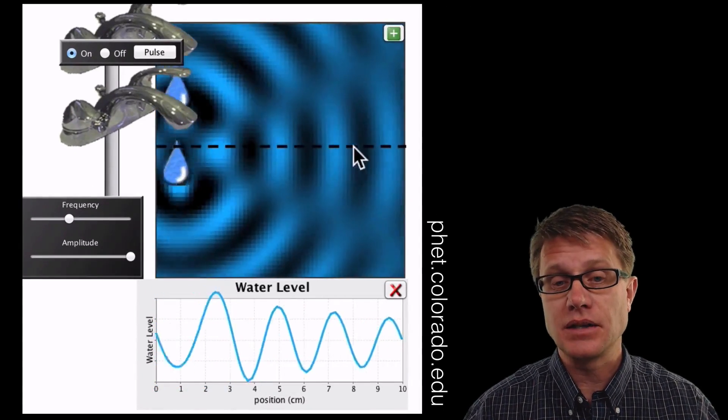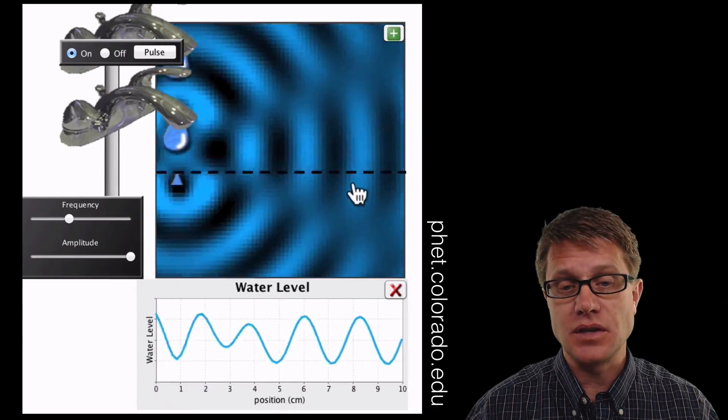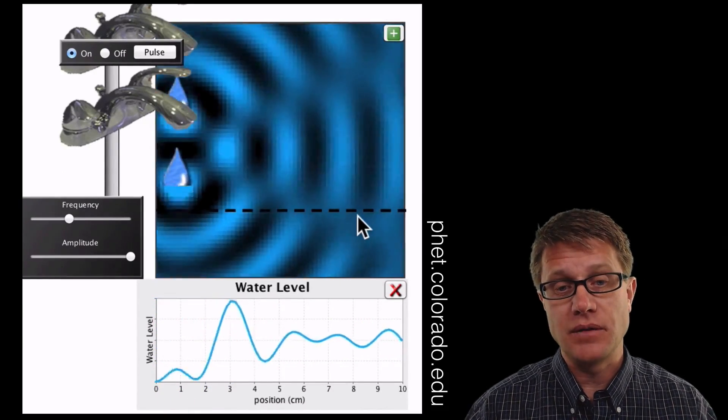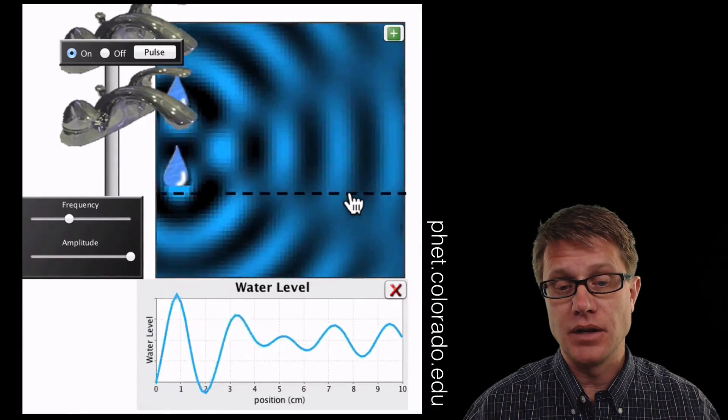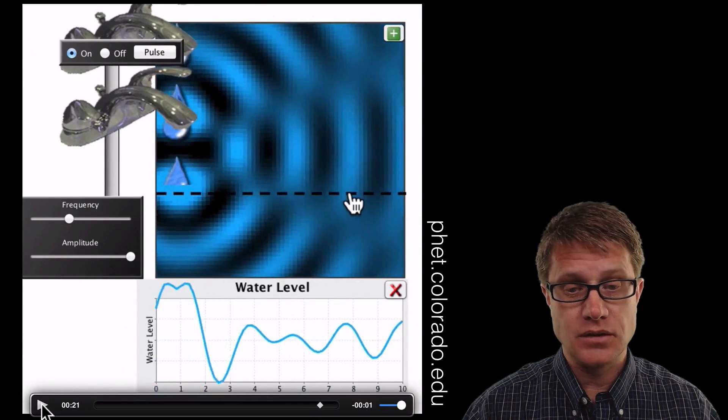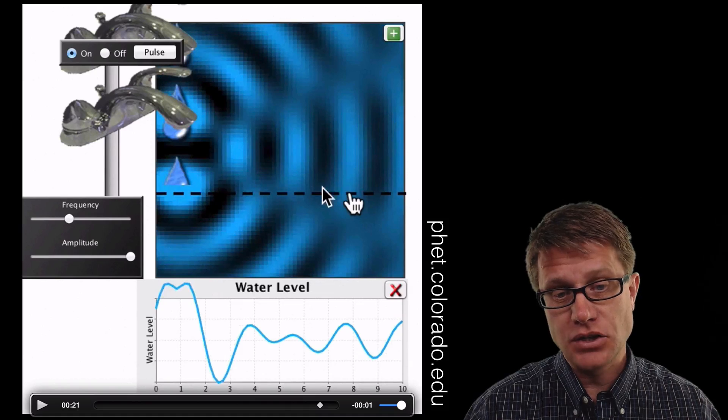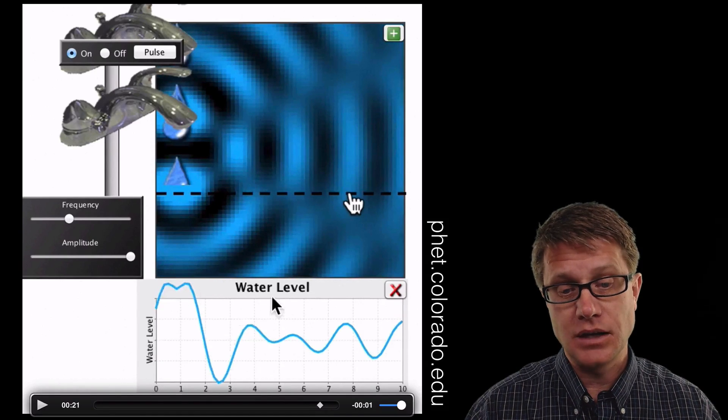And as those wave fronts interact, we get interference. You can see some areas where they're canceling each other out. We have these gray areas where there's not much waves, and then we have these darker areas. So let me pause this right here. What happened is if we're just measuring it along this length, you've got big waves right at the beginning.